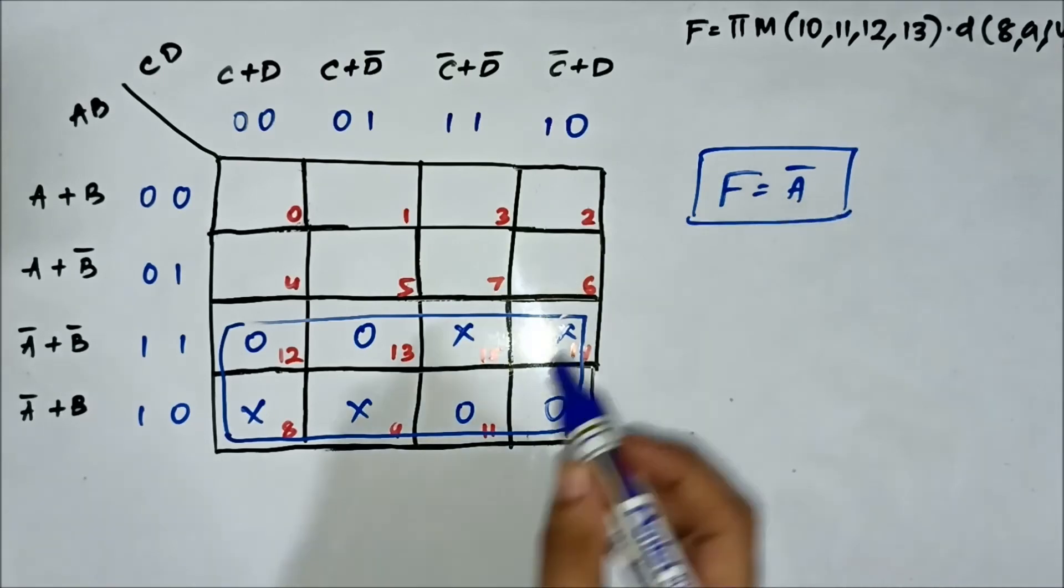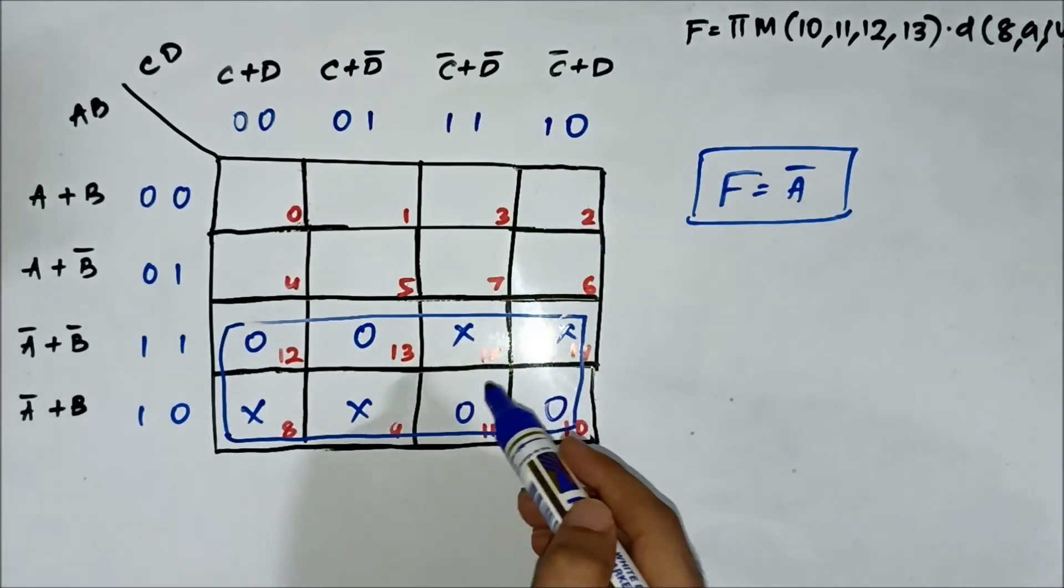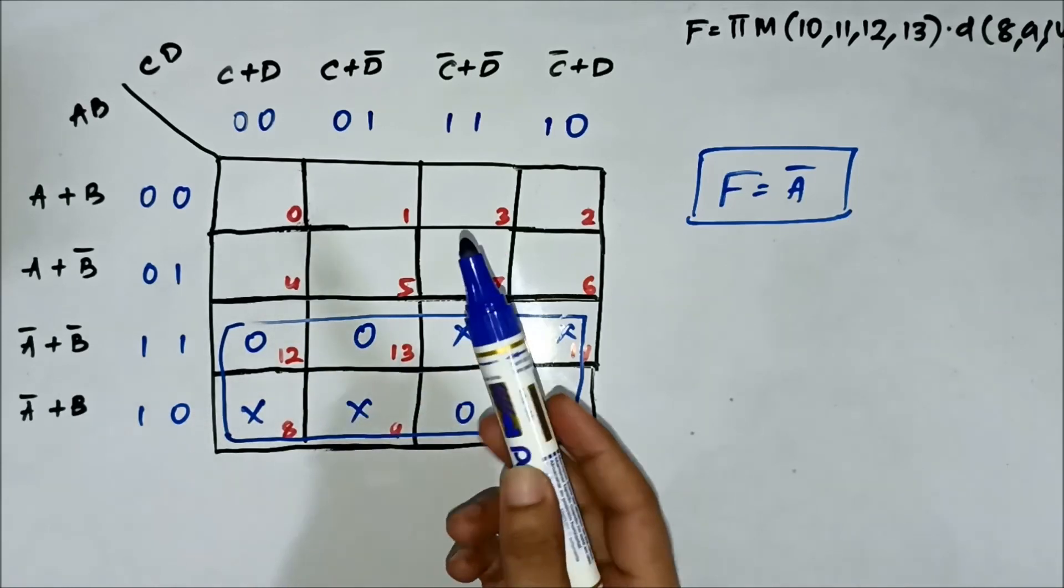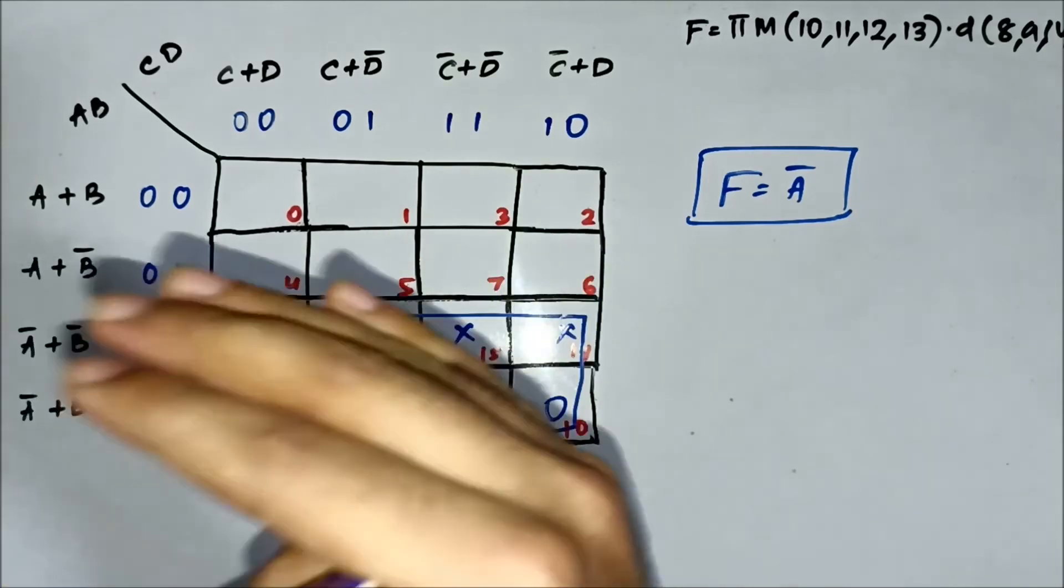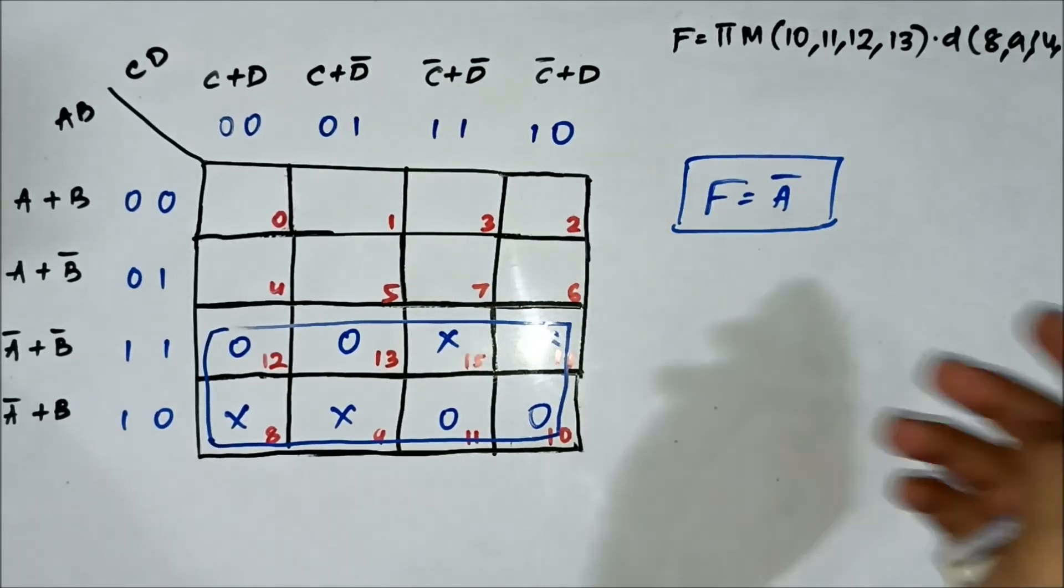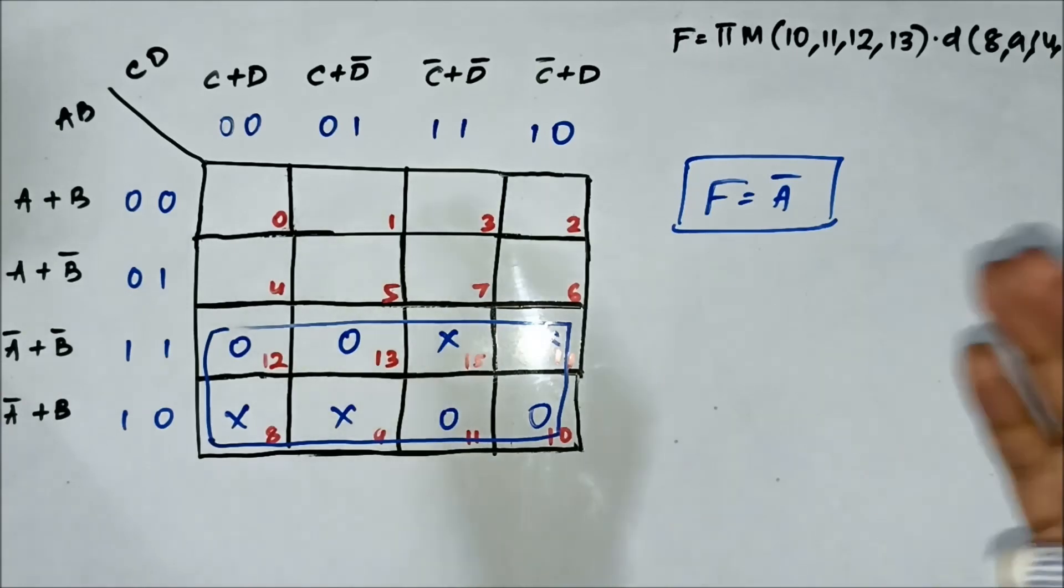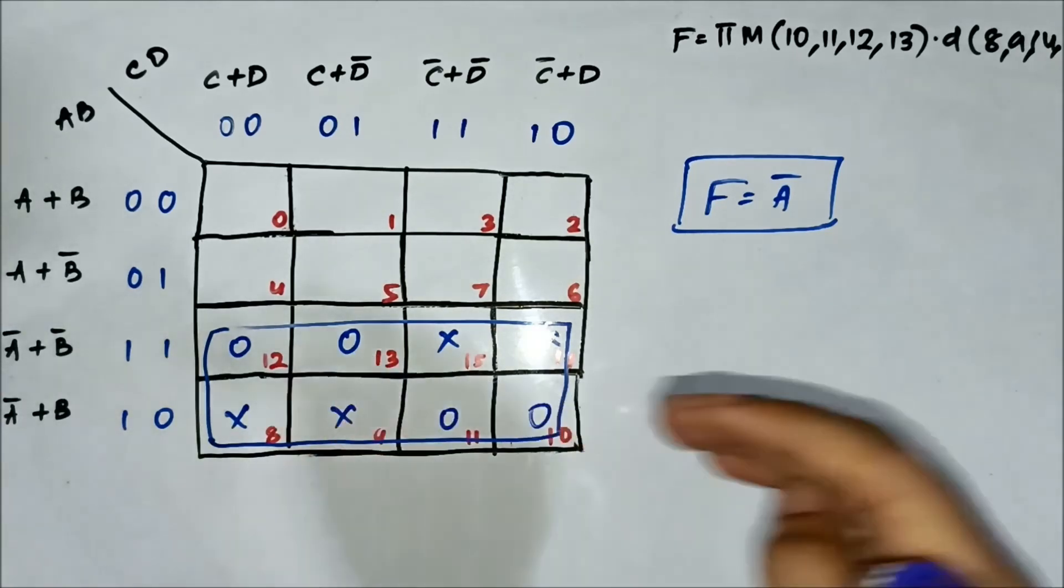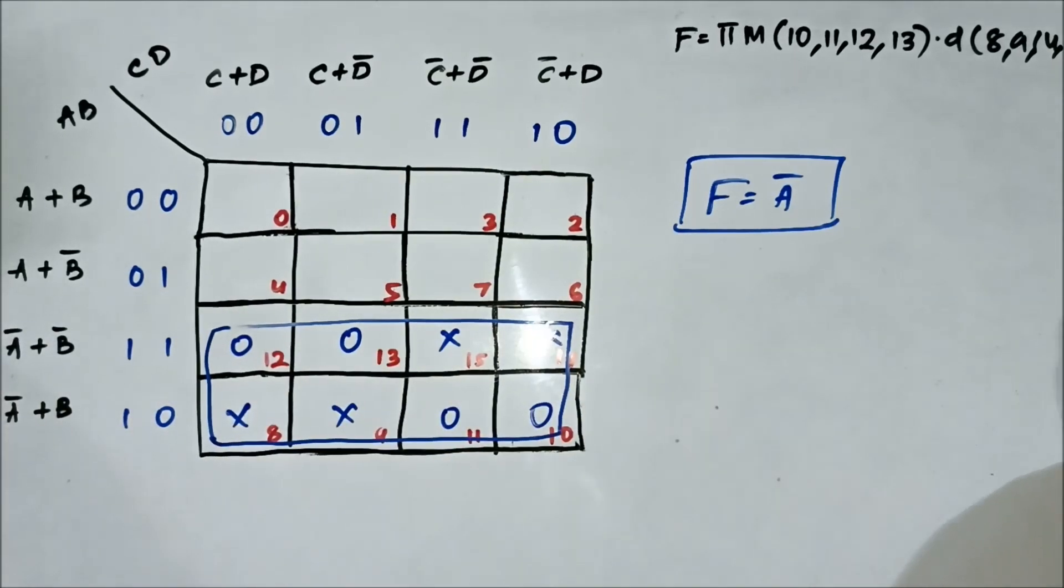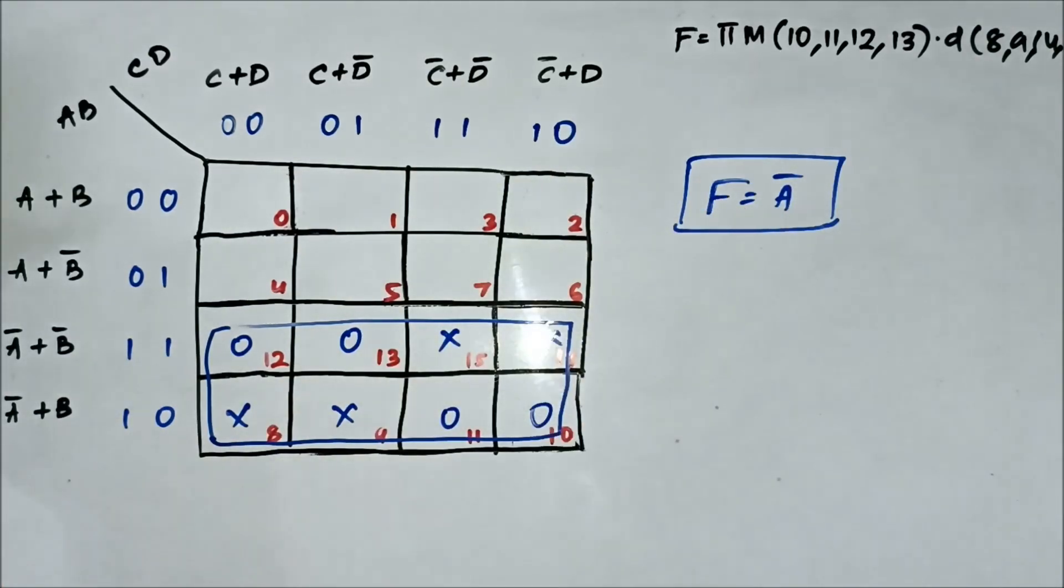Here you see how the don't care cells, the X marked cells, they are assisting in group formation in the whole process of simplification of a boolean expression. The same thing also happened in the SOP K-map and the SOP expressions in those questions also. This is the simplified boolean expression.